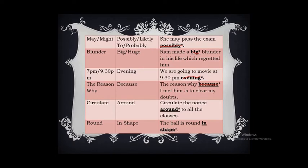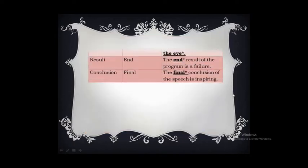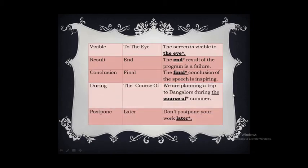'Circulate around' — circulate means move around, so using 'around' again makes it superfluous. The correct form is: 'Circulate the notice to all the classes.' 'Round in shape' — round itself is a shape, so using 'in shape' makes it superfluous. The correct form is: 'The ball is round.' 'Visible to the eye' — visible means we can see it, so 'to the eye' is superfluous. The correct form is: 'The screen is visible.'